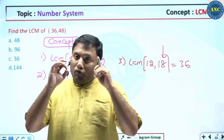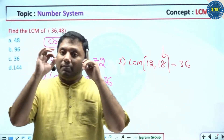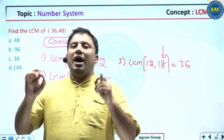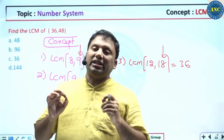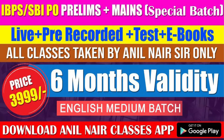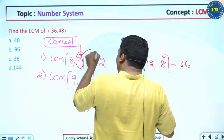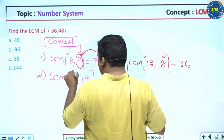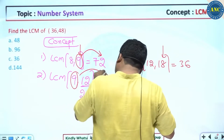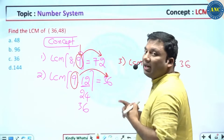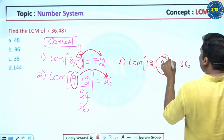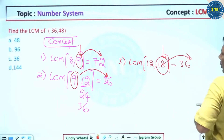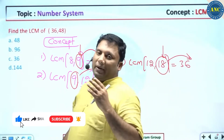If one number's digital sum is 9 as an input in the question, the LCM of any numbers where one number has digital sum 9 — the answer should also have digital sum 9. In LCM-related problems, if one number's digital sum is 9, the answer's digital sum should be 9.